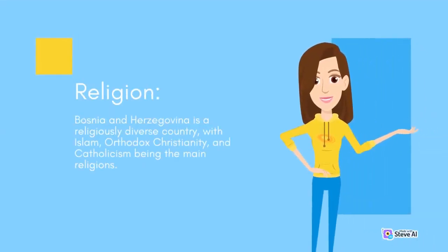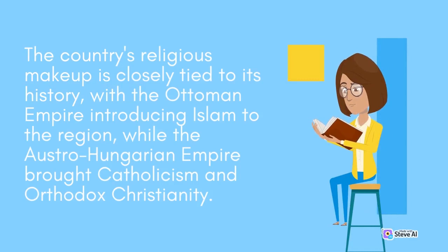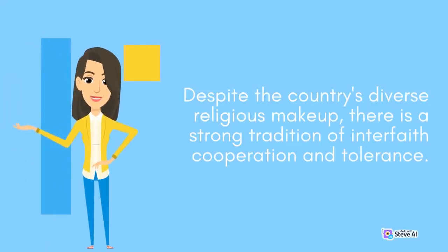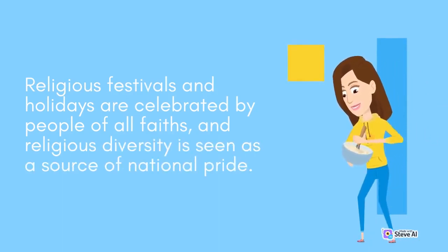Bosnia and Herzegovina is a religiously diverse country, with Islam, Orthodox Christianity, and Catholicism being the main religions. The country's religious makeup is closely tied to its history, with the Ottoman Empire introducing Islam to the region, while the Austro-Hungarian Empire brought Catholicism and Orthodox Christianity. Despite the country's diverse religious makeup, there is a strong tradition of interfaith cooperation and tolerance, and religious diversity is seen as a source of national pride.